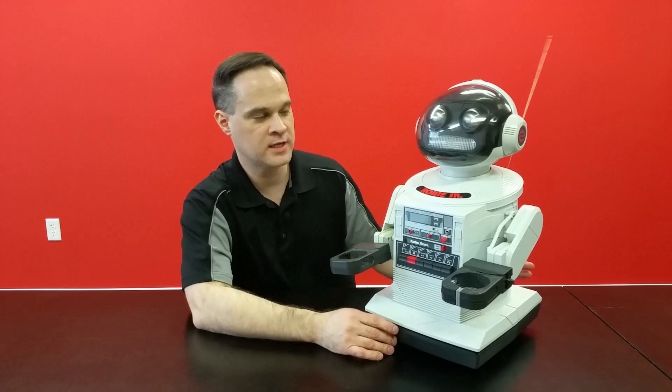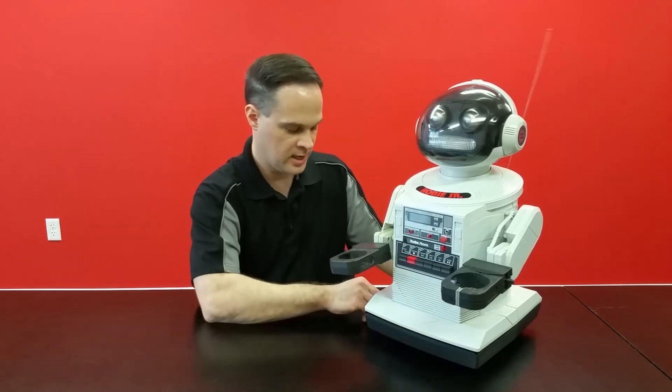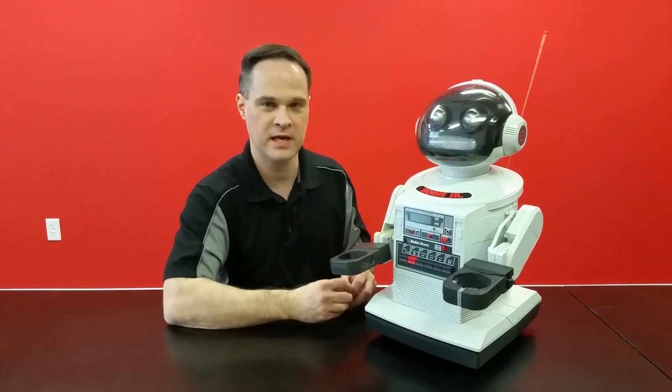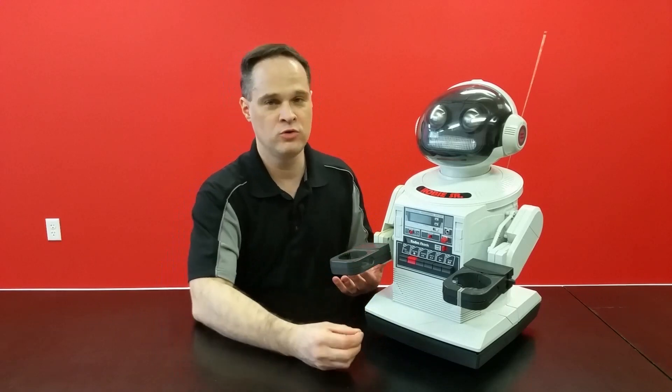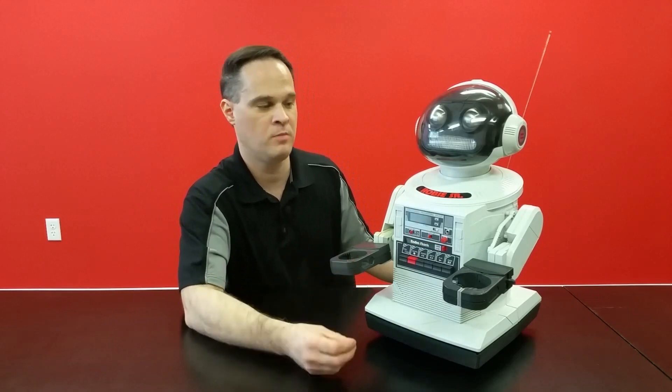So the first step in this project is to take Robie apart and the good news is that's really easy to do. The entire robot uses the same screws throughout the entire body and chassis, so you don't have to worry about getting anything mixed up. There are very few screws to take the body apart and disassembly is really easy, which is one of the great things about this robot.